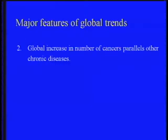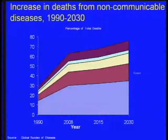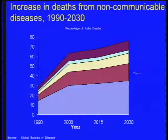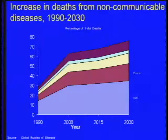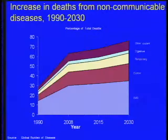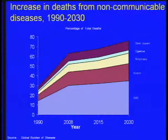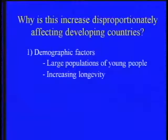What is happening in cancer parallels what's happening in other chronic diseases. Data from the Global Burden of Disease shows the increase in deaths from non-communicable diseases from 1990 to 2030. Cancer is a smaller increase than cardiovascular diseases taken collectively, but larger than the other causes shown. This is the huge epidemiologic transition occurring throughout low and middle-resource countries.